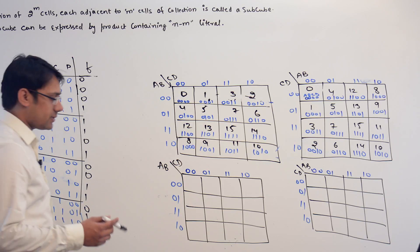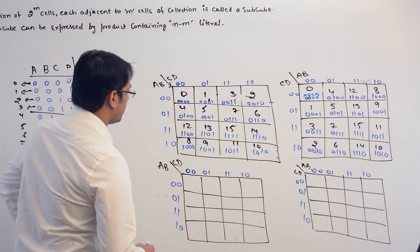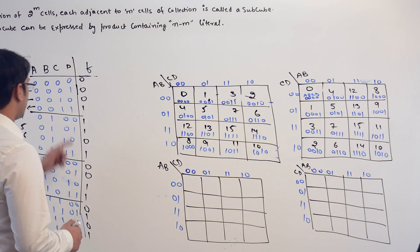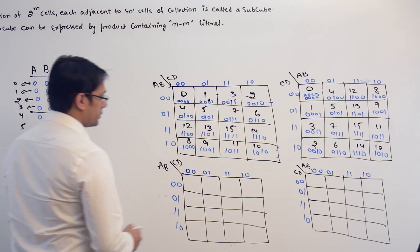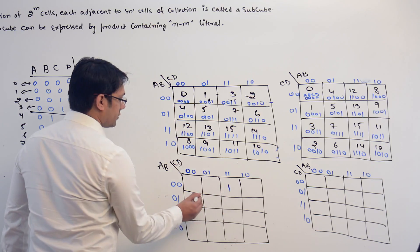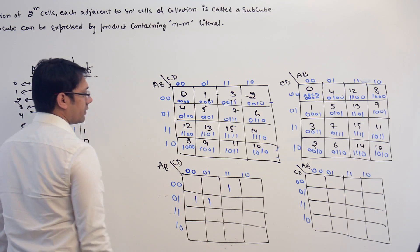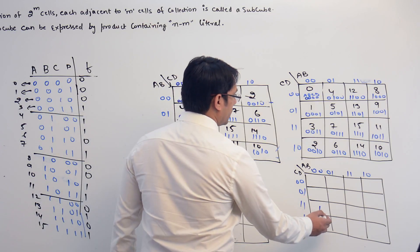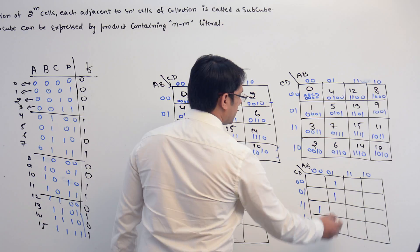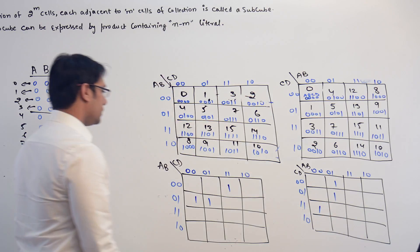In both the K-maps, let me mark it. We have the values 1 at 3, 4, 5. So this is 3, this is 4, this is 5. Here, this is 3, this is 4, and this is 5.